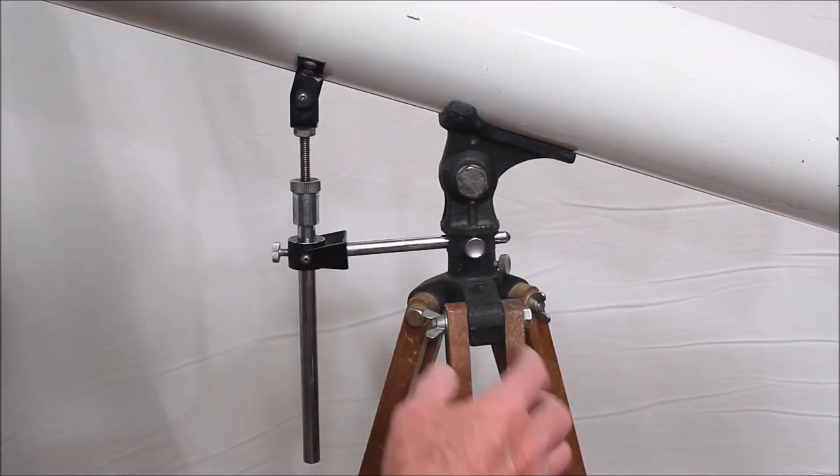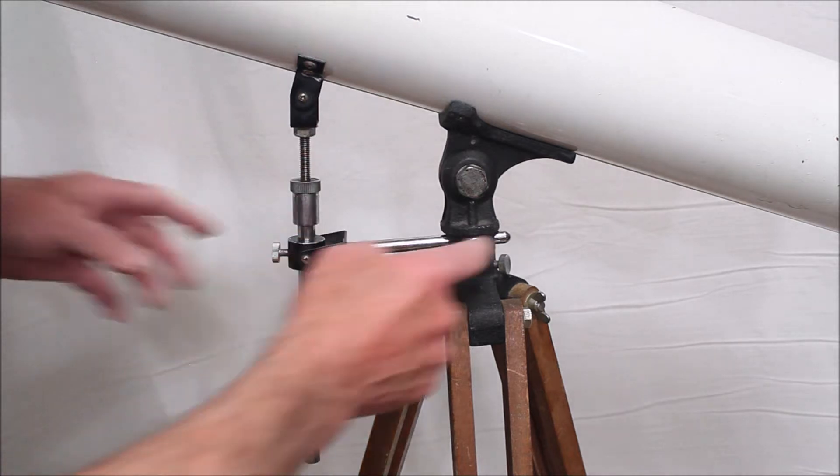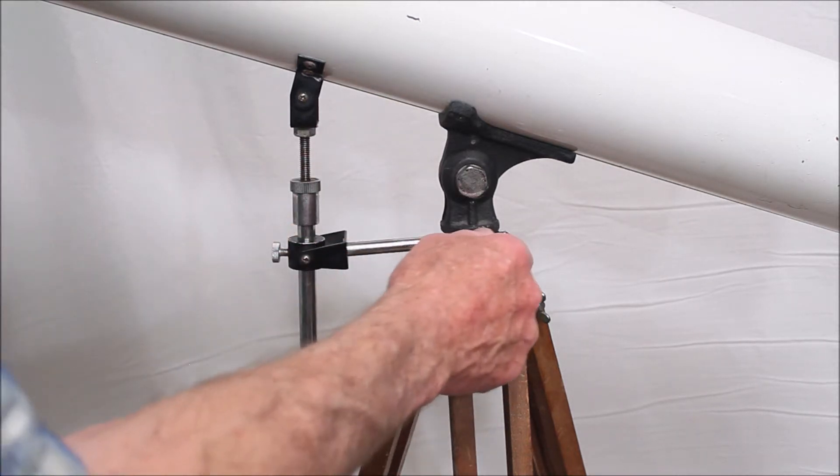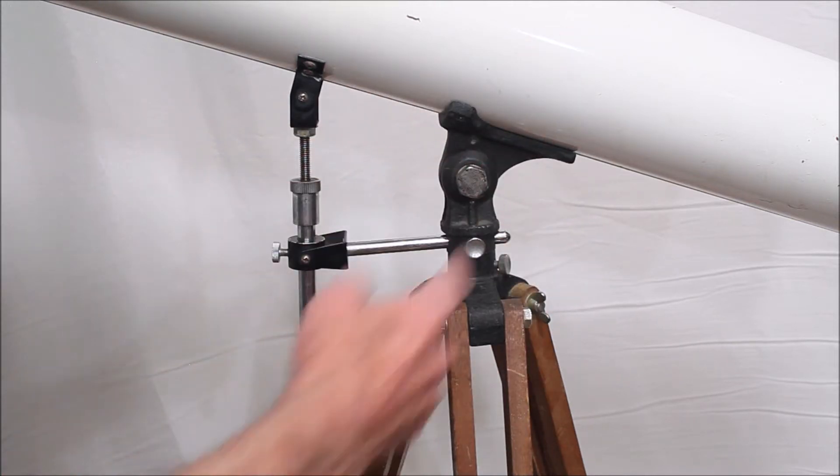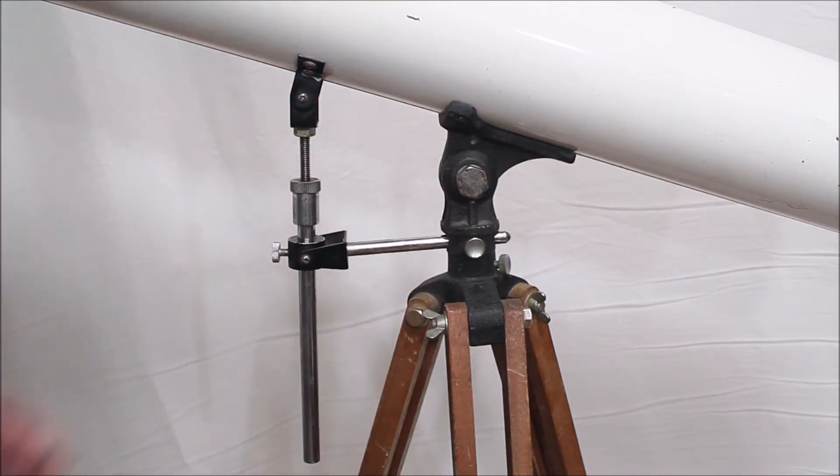The most interesting thing about this scope and the reason I bought it is because of this very unusual structure here. This is quite rare, you don't see these. Typically you'll see a fork mount and maybe that will have a slow motion on it but you never see these very much.